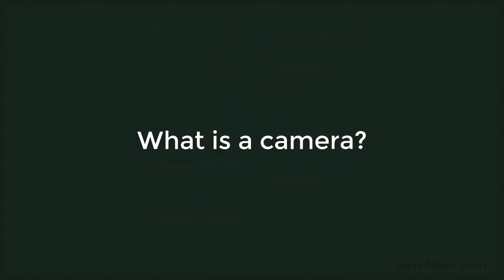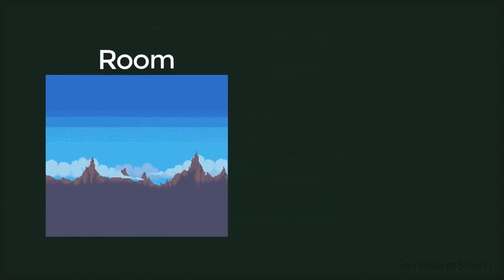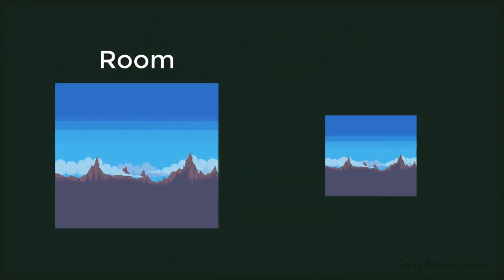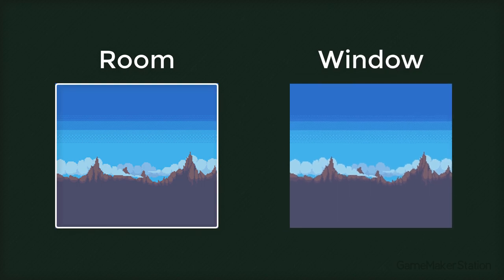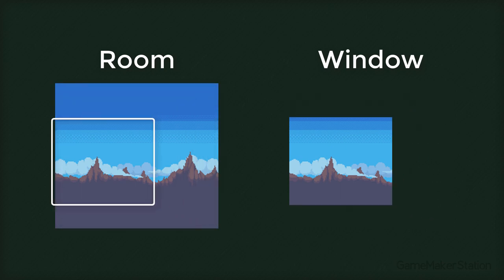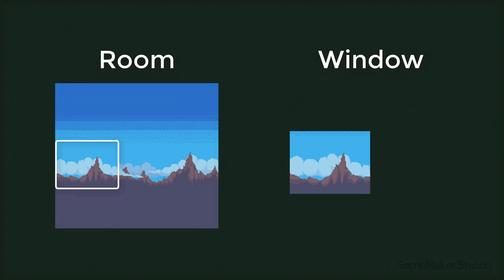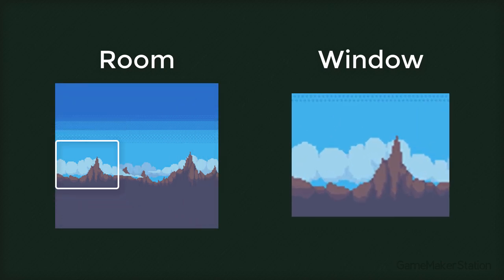So what is a camera? By default, if you run a game, the whole room will be visible. But in some games, you need to create a bigger room that has your whole world and you only want a part of that room to be visible. So for that, we can use cameras.